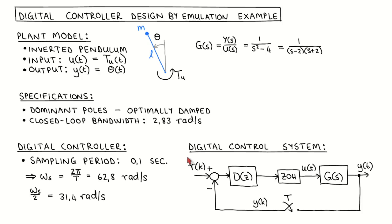We can see the digital control system configuration here on the right. The plant input is the analog signal u(t), the plant model is the continuous transfer function G(s), and the output is the analog signal y(t), which is sampled every T seconds, subtracted from the digital reference input signal r(k), which forms the input to the controller. The output of the controller is put through a zero order hold circuit to form the plant input. Our goal is to design a digital controller in the form of a discrete time transfer function D(z), such that the control system satisfies the specifications.